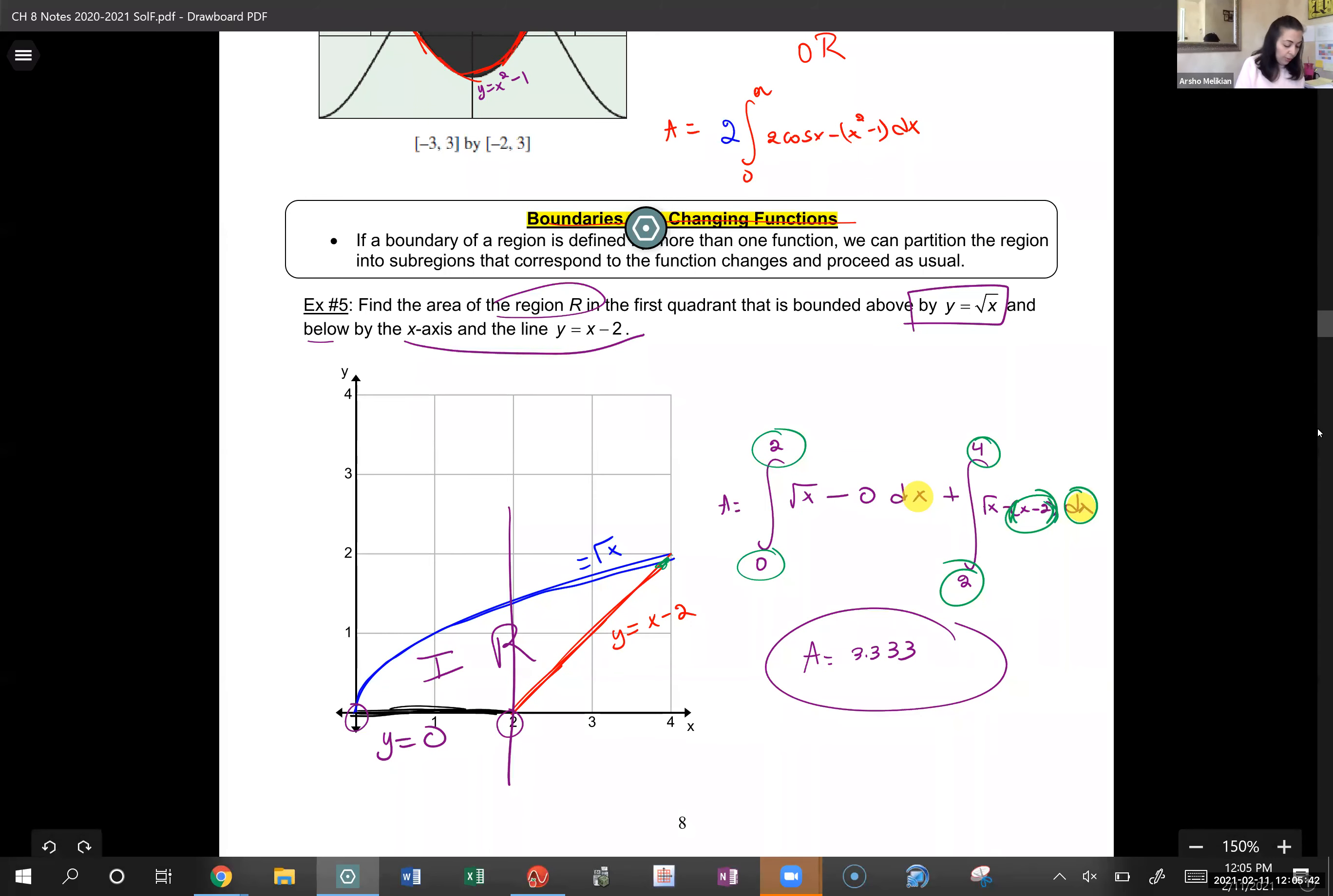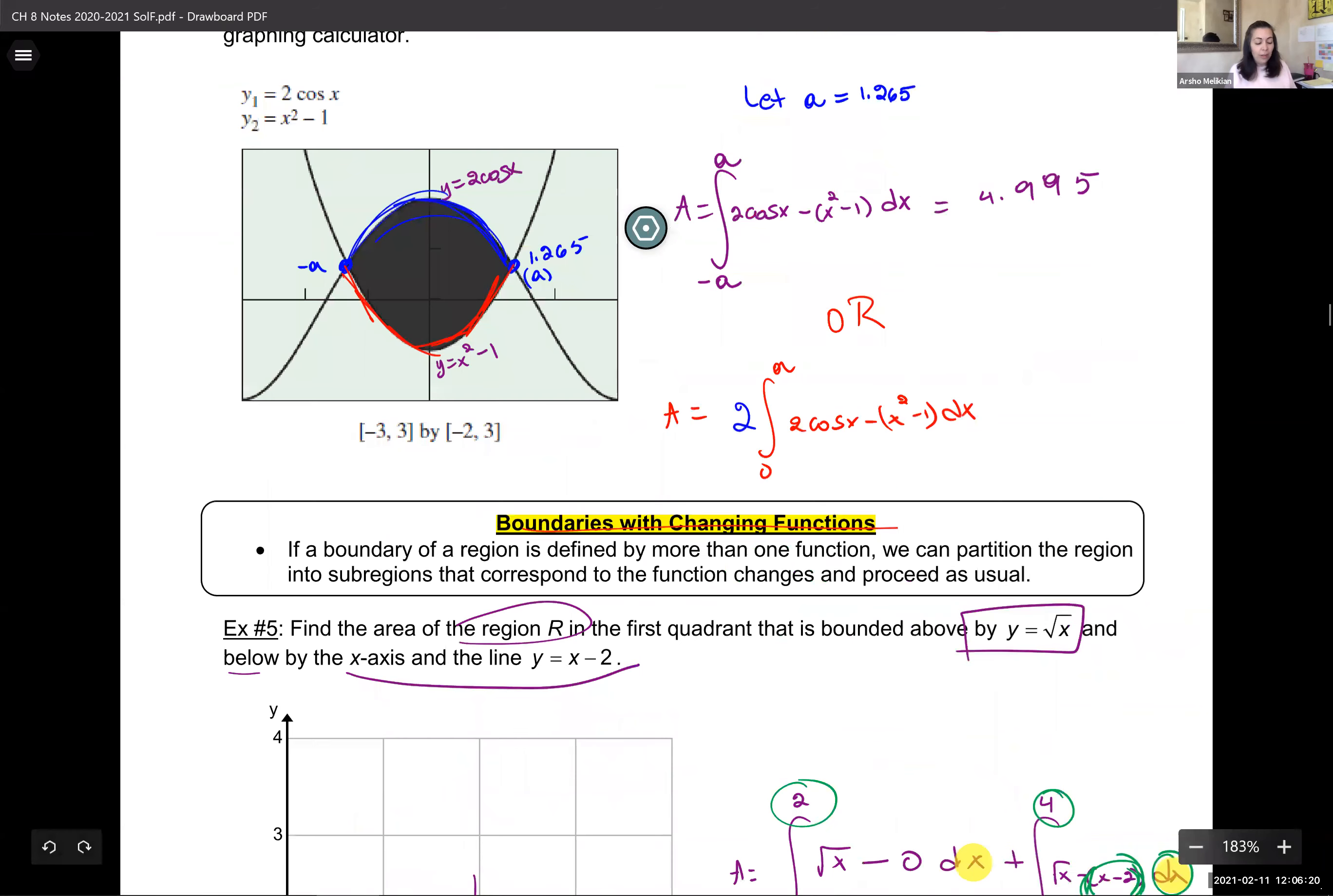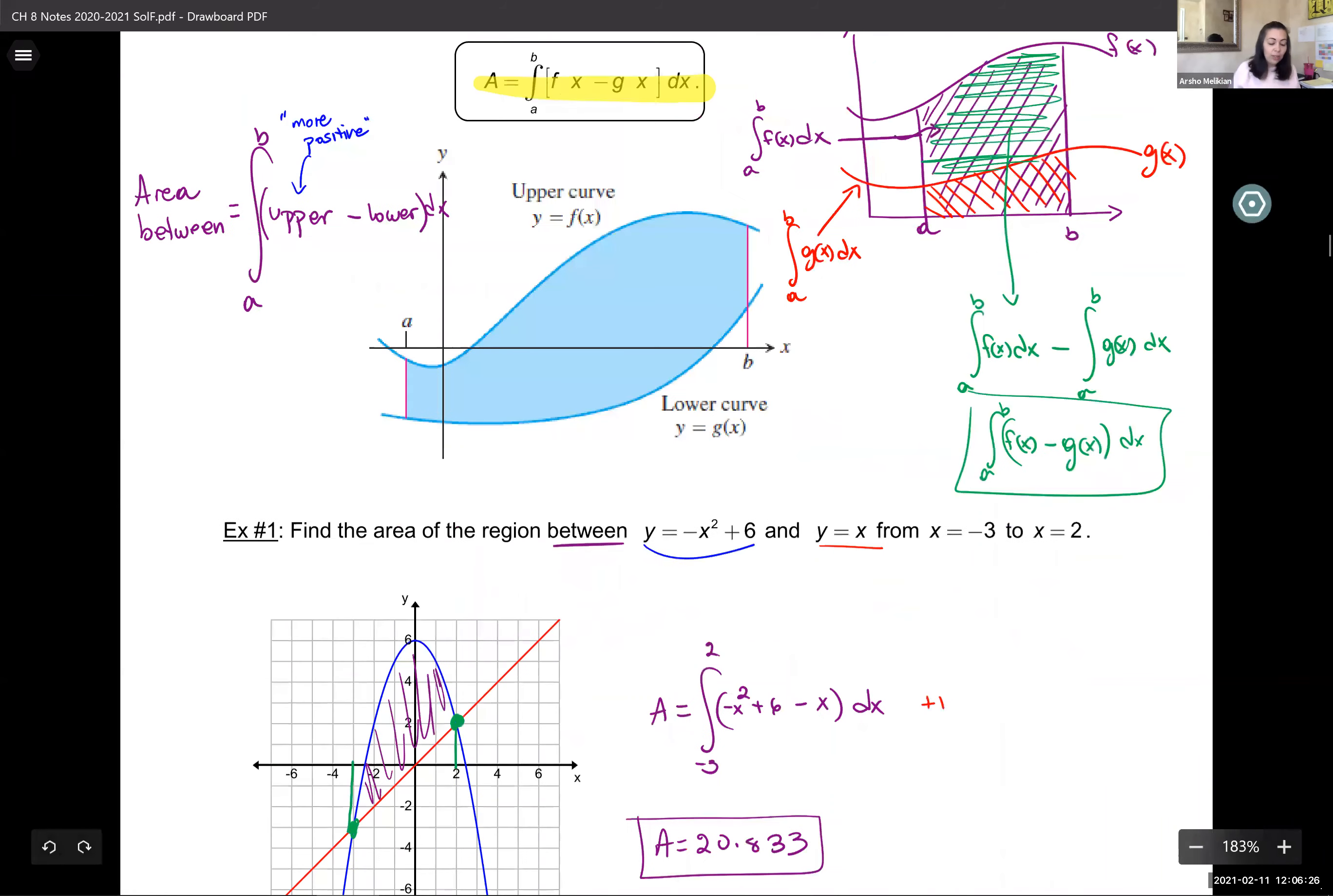Okay, so yesterday we started finding area of a region enclosed between two curves, right? And what we talked about was we have a higher function or a greater function which sits higher, and then a smaller function which sits lower vertically, and we said the area was just the integral of the difference of the functions. But we didn't really talk about what that meant, like what's the meaning behind it all, right? Let's talk a little bit about that now.